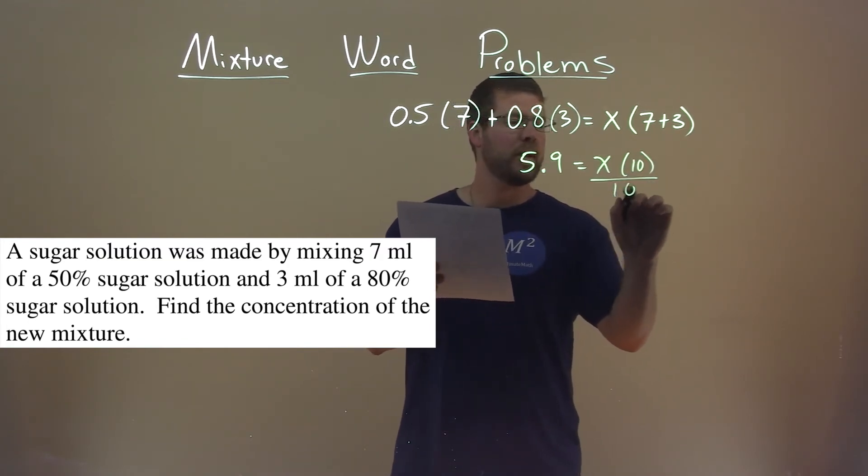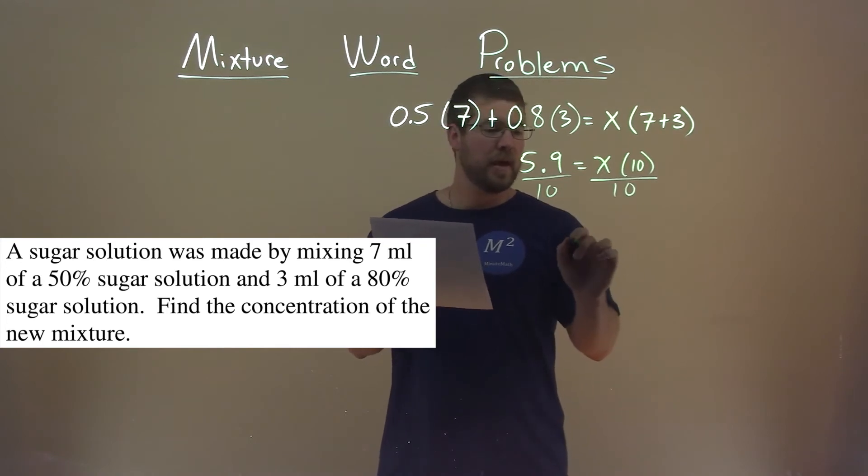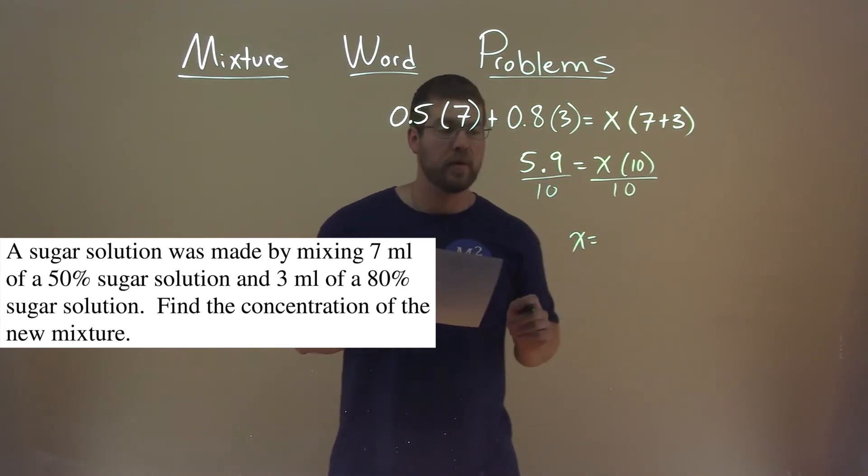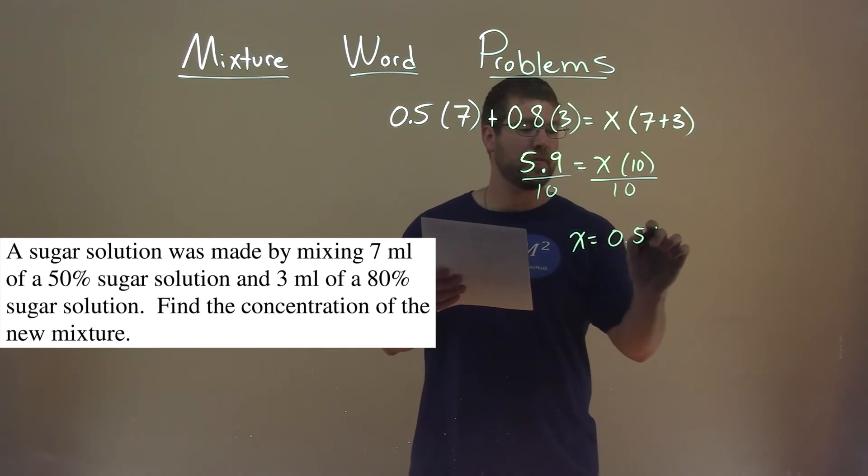We divide both sides by 10, not too difficult here, and x equals 5.9 divided by 10 is 0.59.